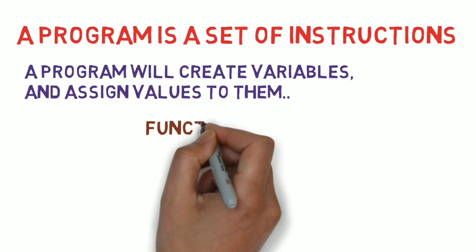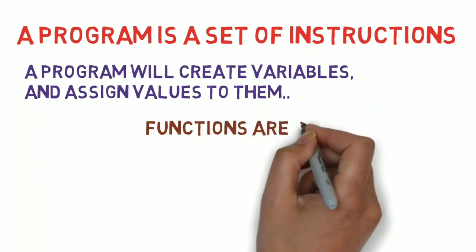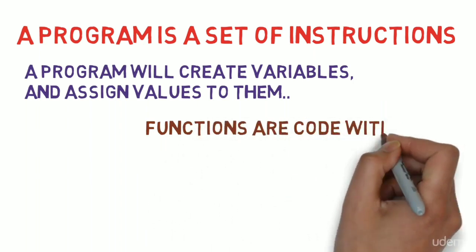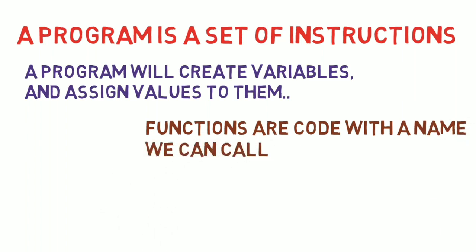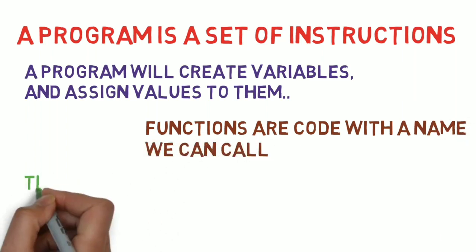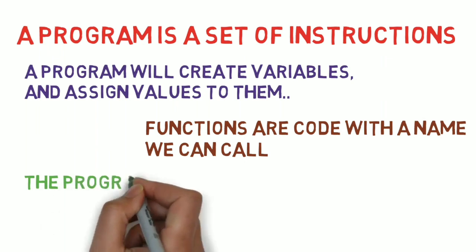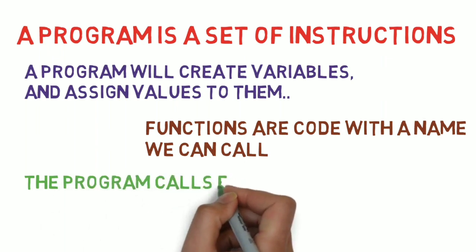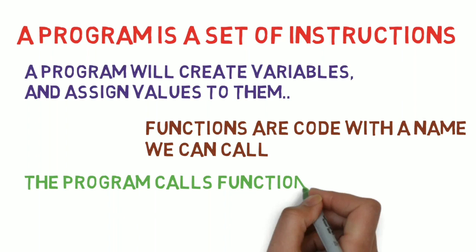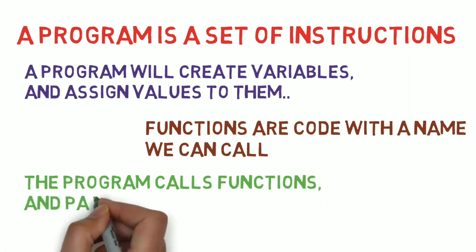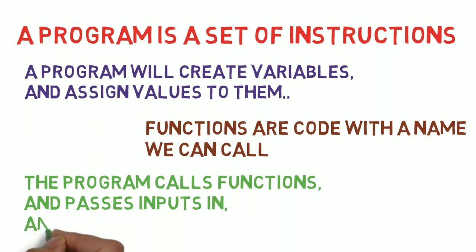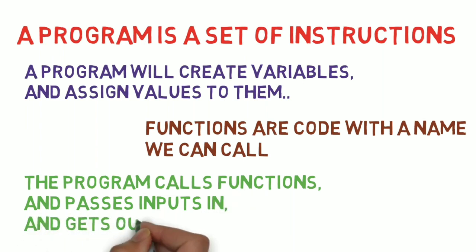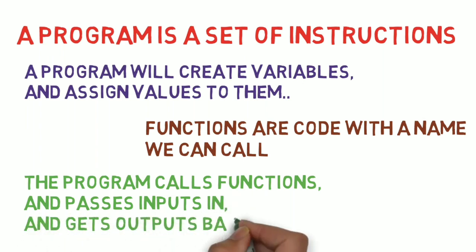A function is like a transformation. It takes these variables and does something with them. A function is like a food processor. You can take a variable, pass it into a function and get an output from that function. The program will call a function, pass in a variable to it as an input and get output back.